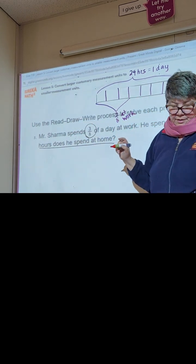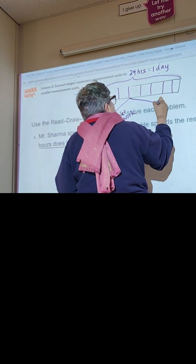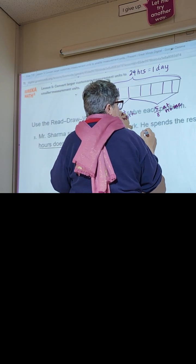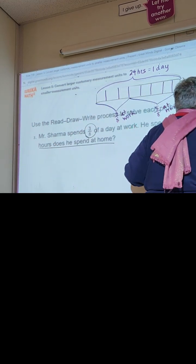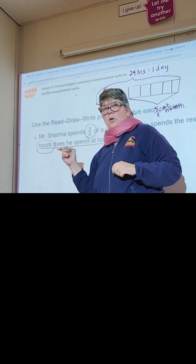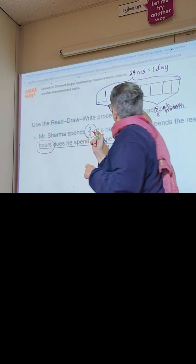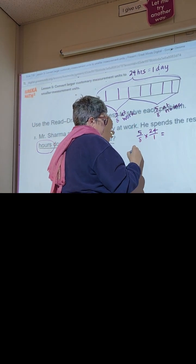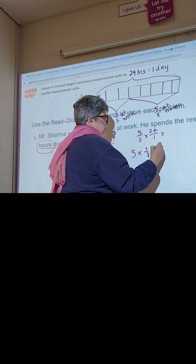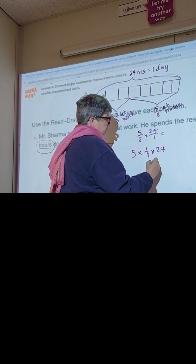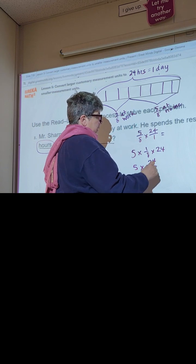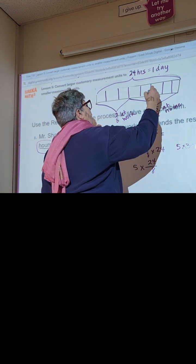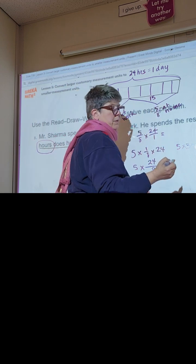The question asks how many hours he spends at home, so the rest of the time — five-eighths — is at home. We need the answer in hours: five-eighths times 24 hours. We change it to five times one-eighth times 24, so we can move 24 over and multiply by five, because 24 divided by eight is three, and three times five is fifteen.